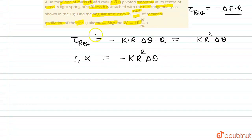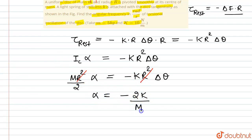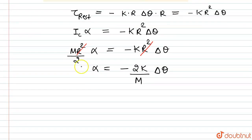The moment of inertia about the center of the disk is mr²/2. So (mr²/2)·alpha = minus k·r²·delta theta. The r² cancels out, and we can write alpha = minus (2k/m)·delta theta.